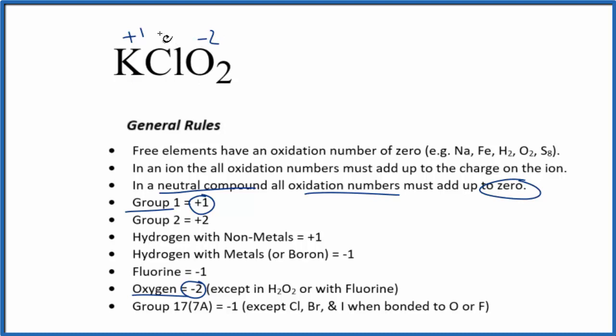So we could figure out what the chlorine is, because we know everything adds up to zero. We could just say one plus X plus, we have the two oxygens times the oxidation number of minus two, and that'll give us zero.